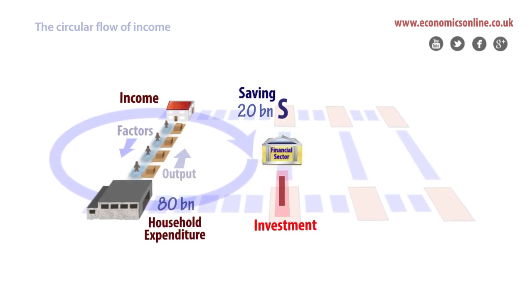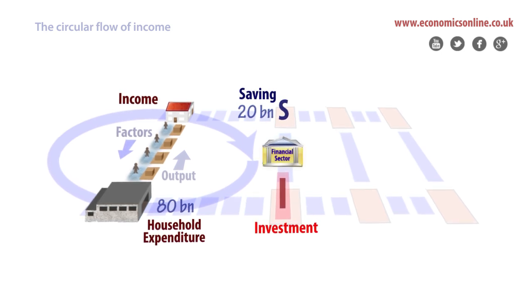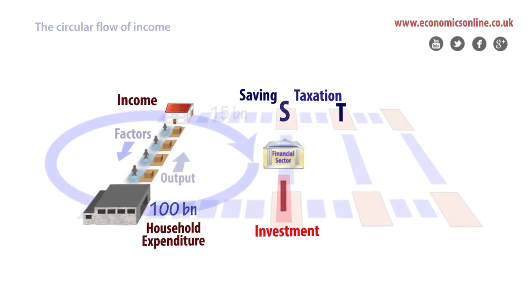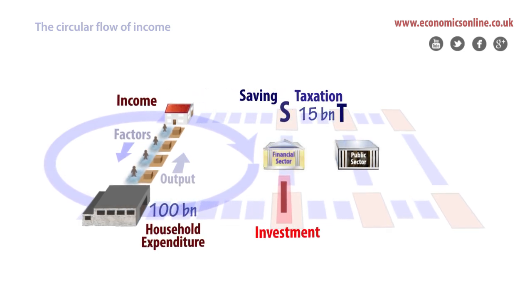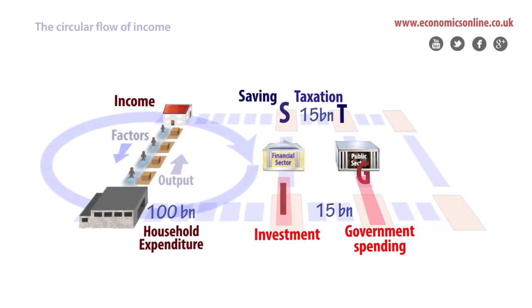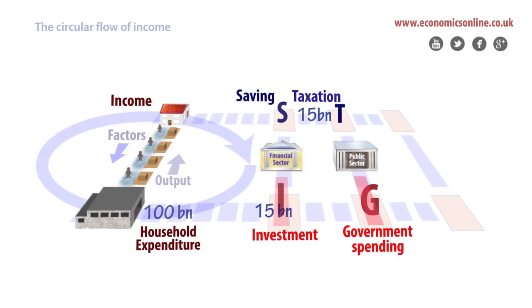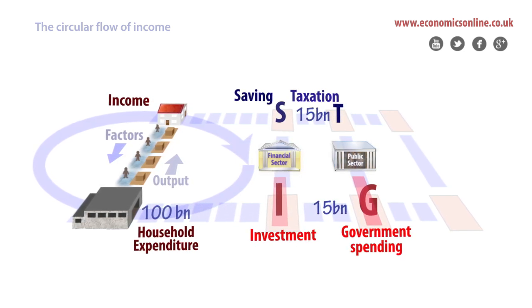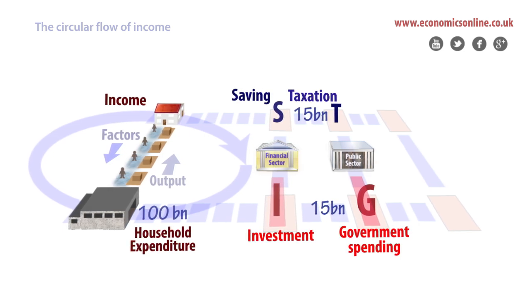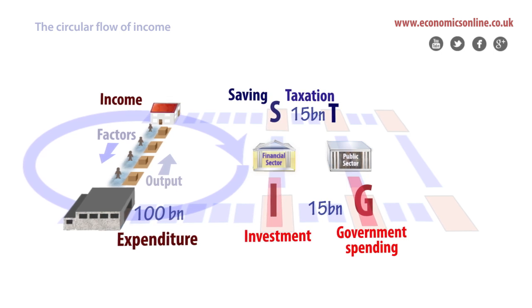A second leakage out of the circular flow is taxation, which is paid to the government. When taxation is spent on public goods, merit goods, and welfare transfers, it is injected back into the circular flow. Taxation may be greater than spending, which creates a fiscal surplus, or spending may be more than tax revenue, which creates a fiscal deficit. Borrowing may be required to make public sector finances balance. In the example, 15 billion is withdrawn in taxation and all is spent, so there is a budget balance.